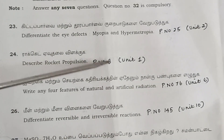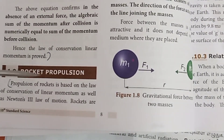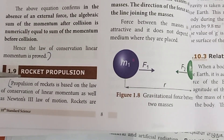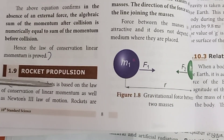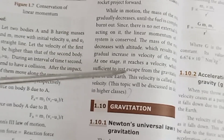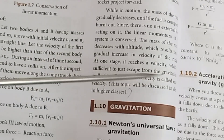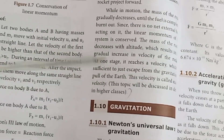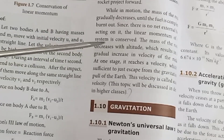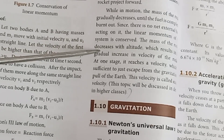Question 24: Describe rocket propulsion. Page number 8, Unit 1. Answer: In rocket propulsion, gases are expelled at high velocity, and this velocity is called escape velocity. This is a very important repeated question.